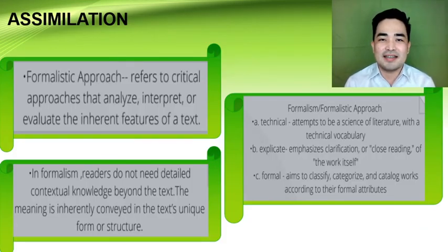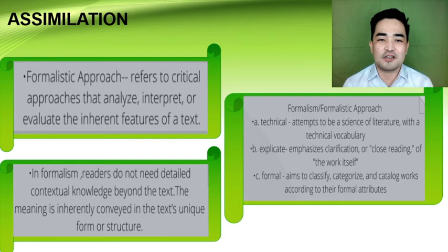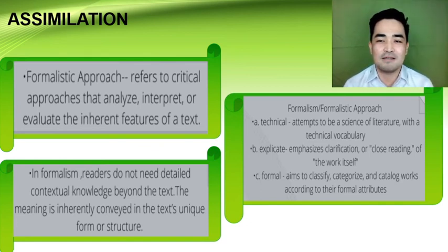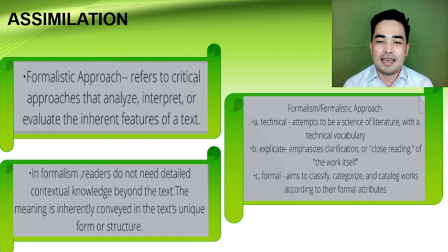In the assimilation phase, let us always remember that the formalistic approach refers to critical approaches that analyze, interpret, or evaluate the inherent features of a text. In formalism, readers do not need detailed contextual knowledge beyond the text. The meaning is inherently conveyed in the text's unique form or structure. Formalism can be technical as it attempts to be a science of literature with a technical vocabulary. It is also explicit — it emphasizes close reading of the work itself. And it is formal: it aims to classify, categorize, and catalogue works according to their formal attributes.